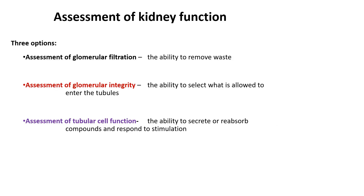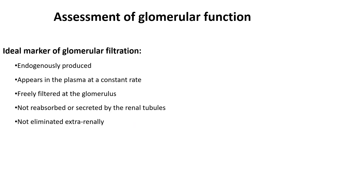To put this into context, the assessment of kidney function involves three things: assessment of glomerular filtration — the ability to remove waste; assessment of glomerular integrity — the ability to select what is allowed to enter the tubules; and assessment of tubular cell function — the ability to secrete or absorb compounds in response to stimulation. Ideal markers of glomerular filtration should be endogenously produced, appear in plasma at a constant rate, be freely filtered by the glomerulus, not be reabsorbed or secreted by the renal tubules, and not be eliminated externally.